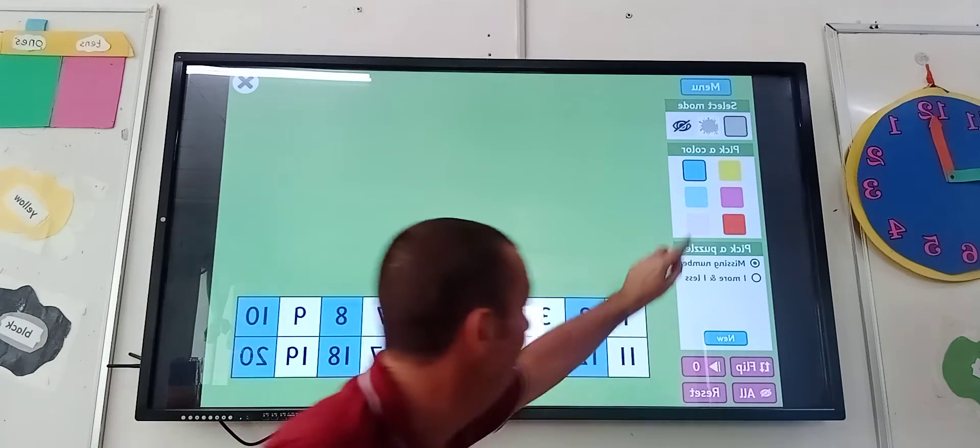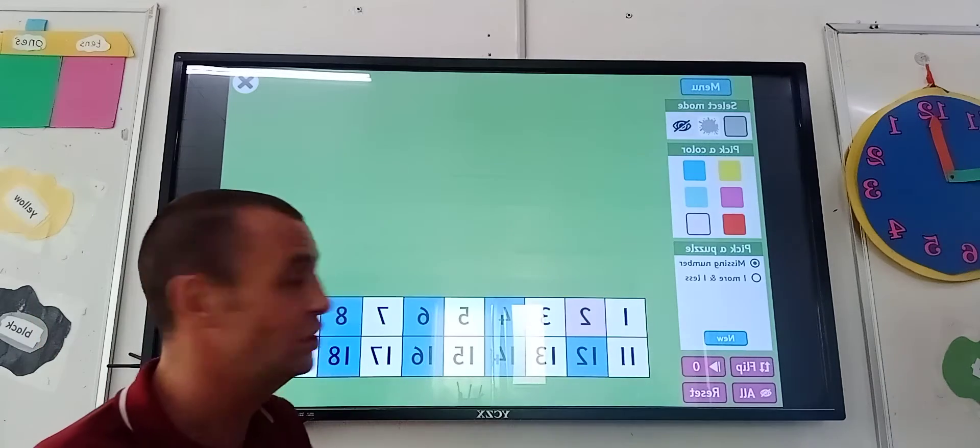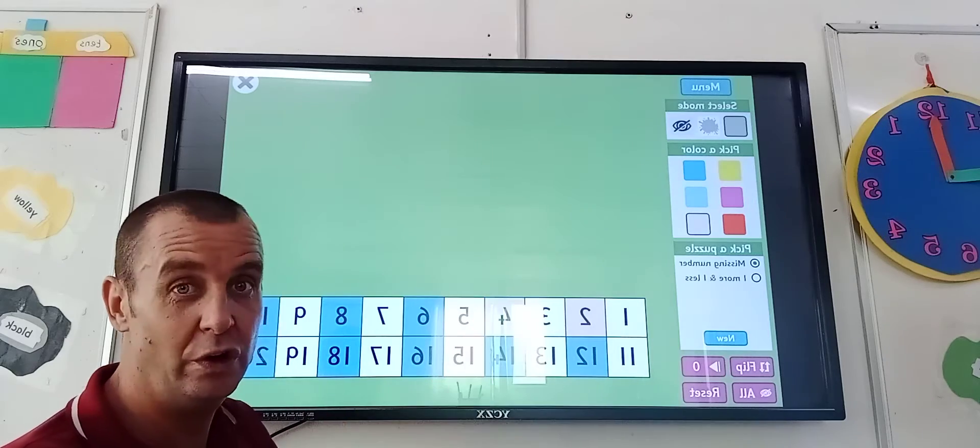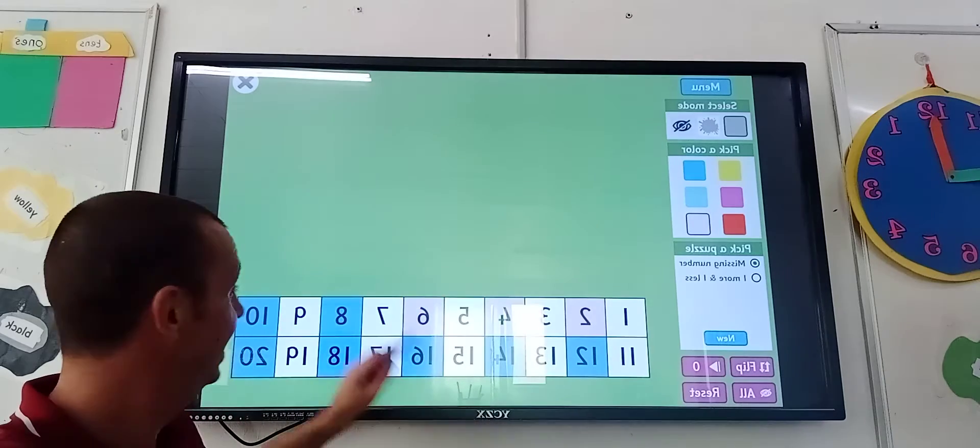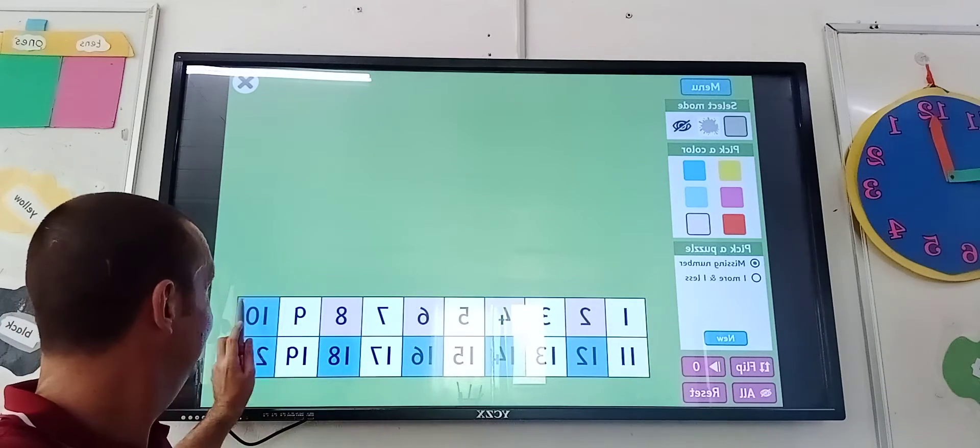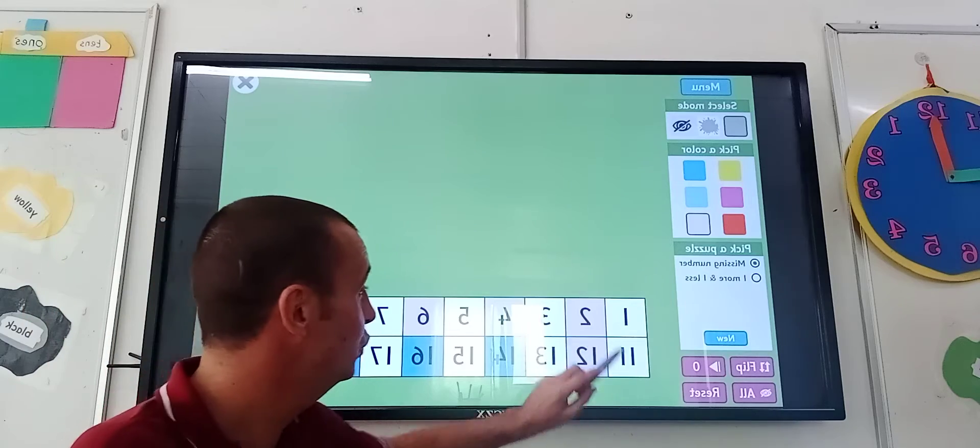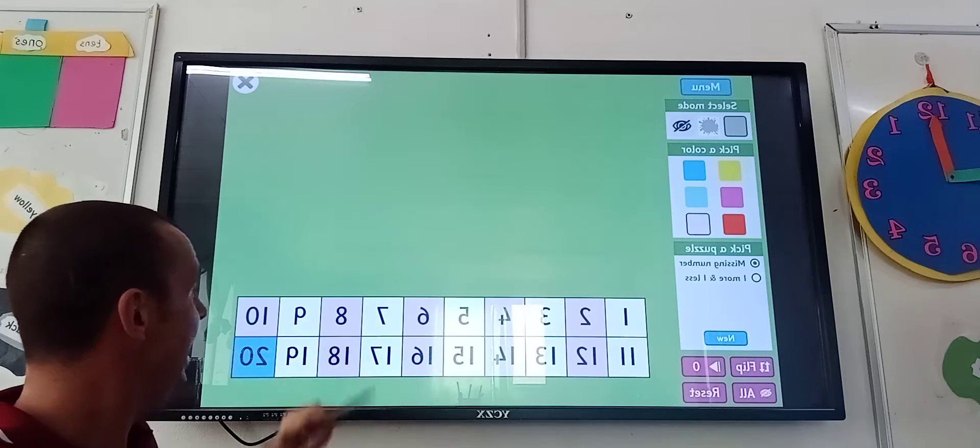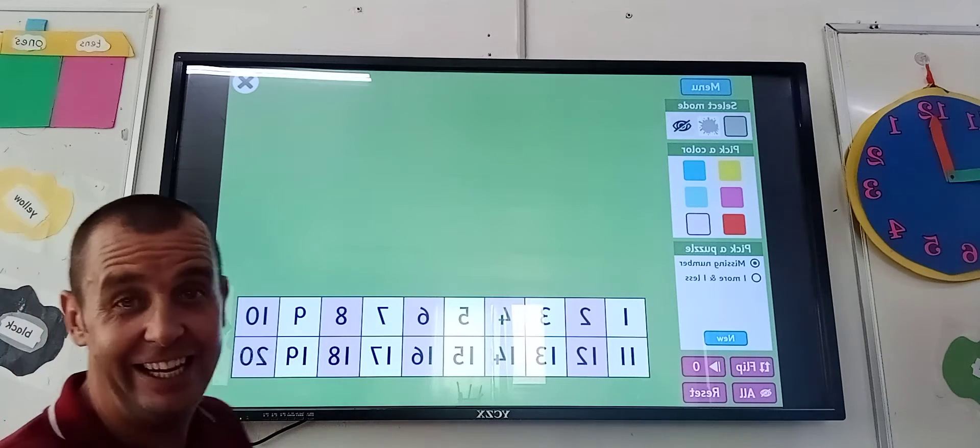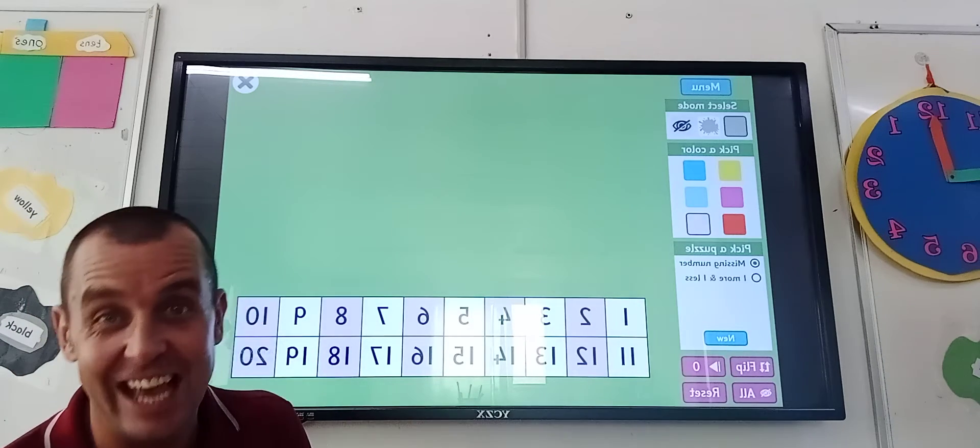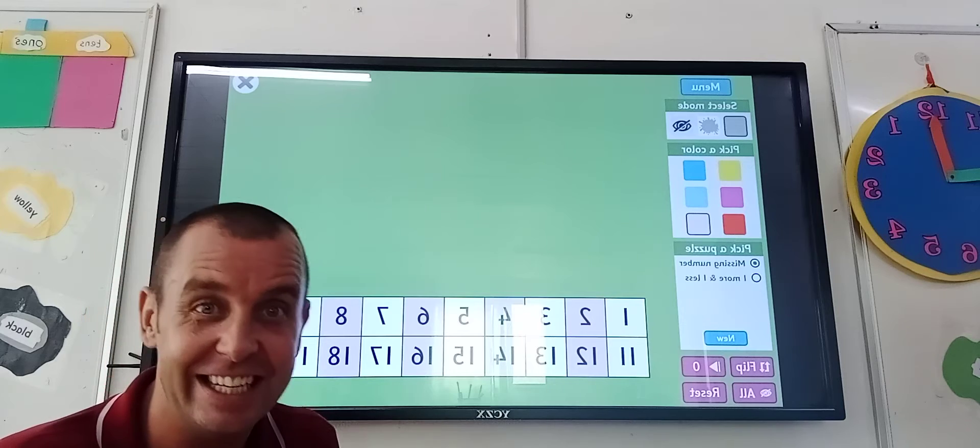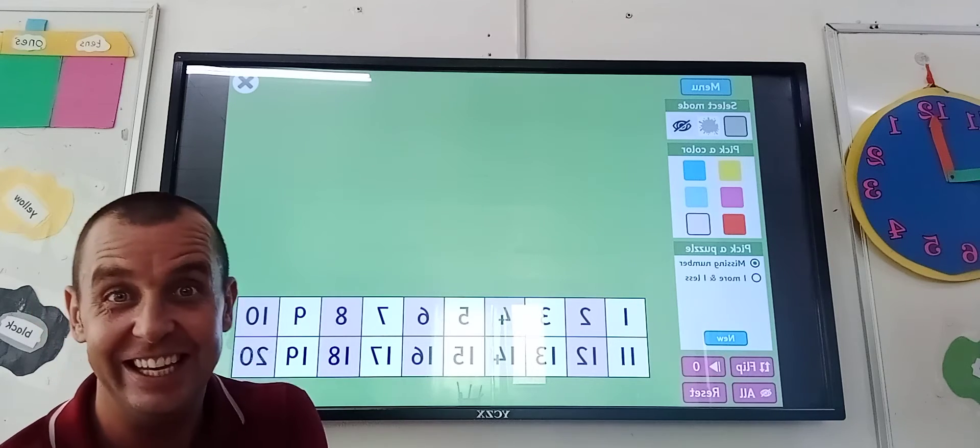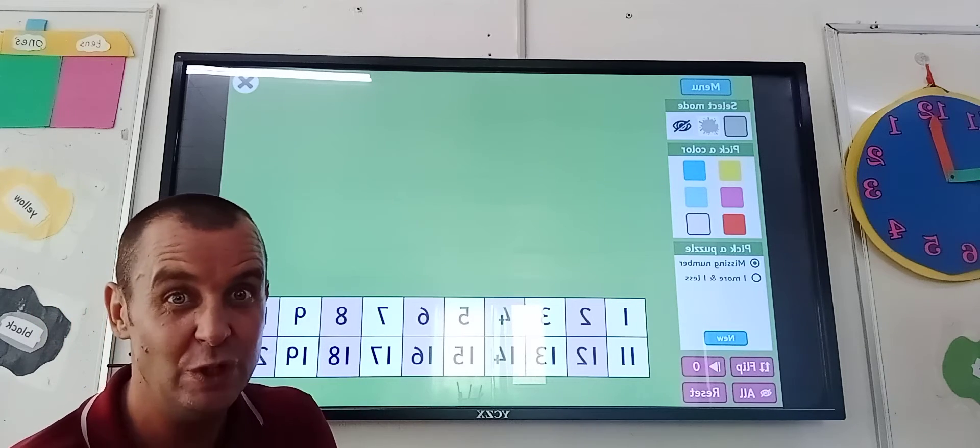I'm going to choose the colour pink. 2, 4, 6, 8, 10, 12, 14, 16, 18, 20. Again: 2, 4, 6, 8, 10, 12, 14, 16, 18, 20. You see that, guys? We count them in twos.